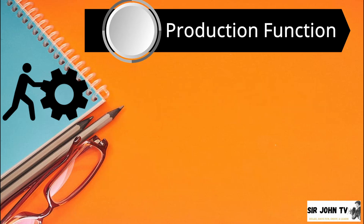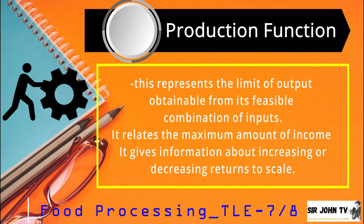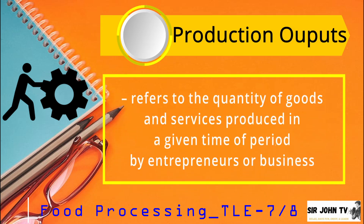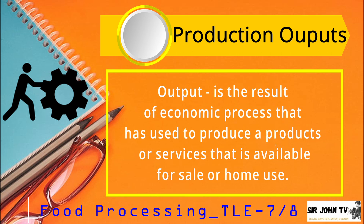Let us define one by one. Production function represents the limit of output obtainable from its feasible combination of inputs. It relates the maximum amount of income and gives information about increasing or decreasing returns to scale. Production inputs refers to resources or factors of production used in the production of output, most frequently associated with short-run production, modified by the terms fixed and variable inputs. Production outputs refers to the quantity of goods and services produced in a given time period by entrepreneurs or businesses. Output is the result of an economic process used to produce a product or service available for sale or home use.